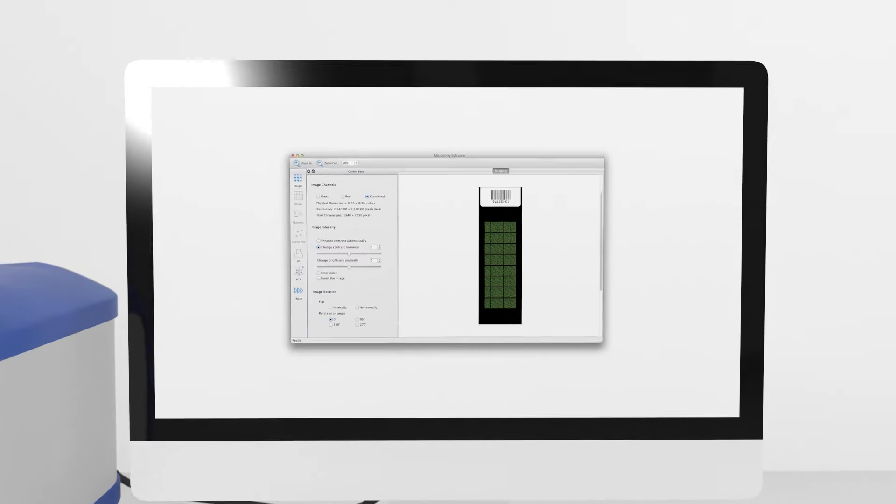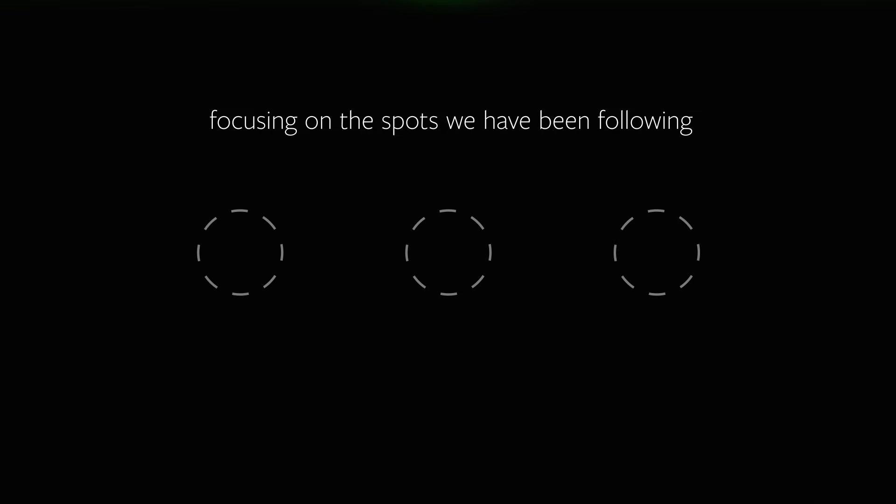We'll examine the next phase of the process, keeping our focus on the three spots we've been following. First, a green laser scans the microarray. The resulting image is stored on a computer for later analysis. Now it's time for the red laser. This image is also stored on a computer for later analysis.